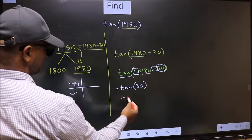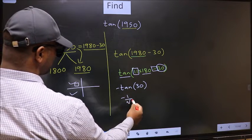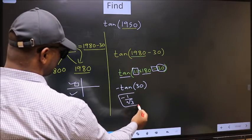So we should put negative. Negative tan(30°) is 1 by root 3. This is our answer.